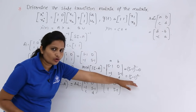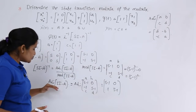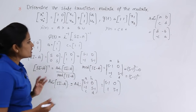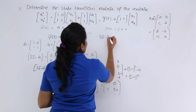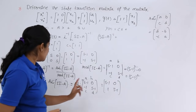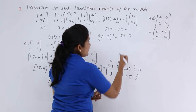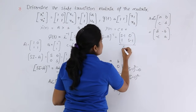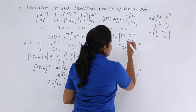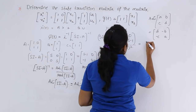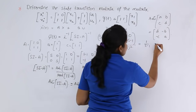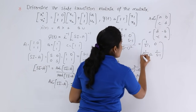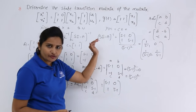Now substituting both into the formula, (sI - A) inverse = adjoint / modulus = [s-1, 0; 1, s-1] / (s-1)². This simplifies to: [1/(s-1), 0; 1/(s-1)², 1/(s-1)]. This is the inverse matrix for (sI - A).